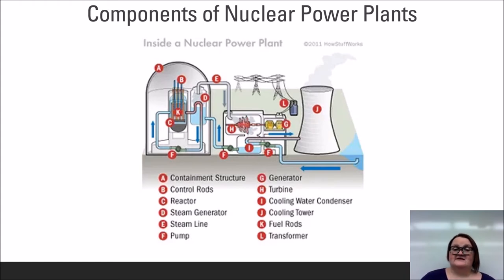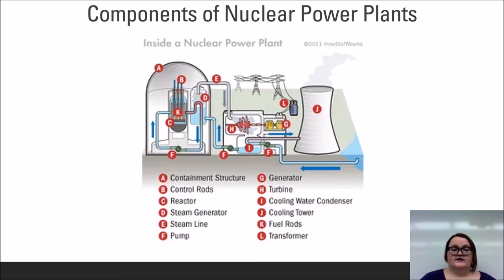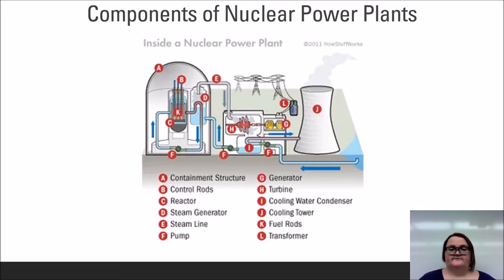Heat from the reactor is used to boil water in the steam generator, marked D. The steam is then put through a progressively narrower pipeline, marked E, that increases pressure when it reaches the turbine, marked H. The turbine is connected to a generator, marked G, which is connected to a transformer, marked L, taking power onto the electrical grid. As the steam cools, it is collected in the condenser, marked I. Some heat is released through the cooling tower, marked J, where water vapor is released into the atmosphere. Some heat is discharged into a nearby body of water, and the rest is recirculated using a pump, marked F, which can also draw water from local sources.